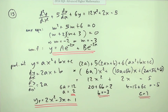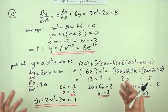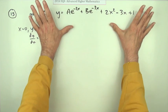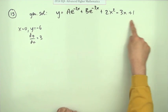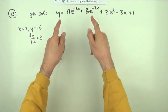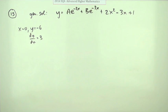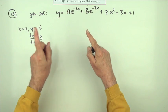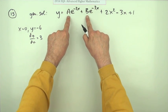We'll need another board to write out the two together as the general solution. There's the general solution, putting the two parts together. The complementary function and the particular integral. And here's the initial conditions to be fed in to get the particular solution.